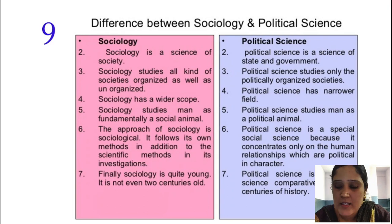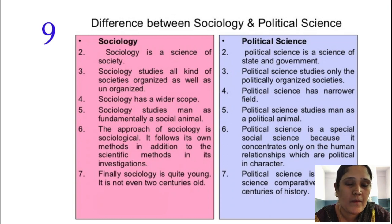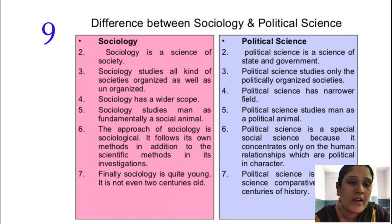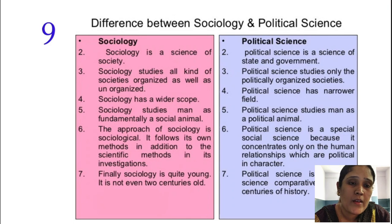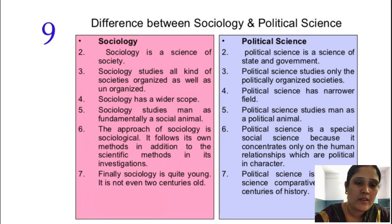This answer will come for five marks, students. It may ask you to explain political science and history, the relationship between political science and economics, or political science and sociology. Whatever is seen on the screen, you can note all the points. Thank you.